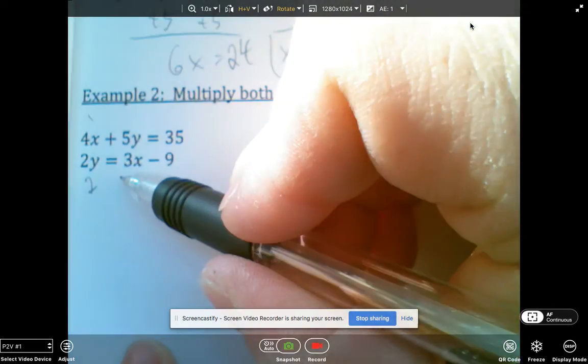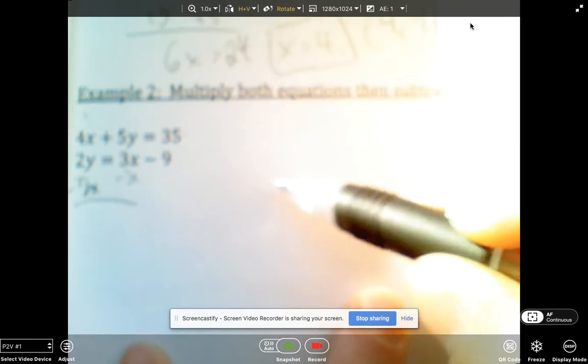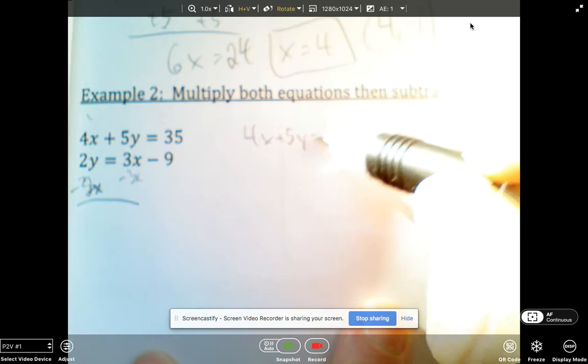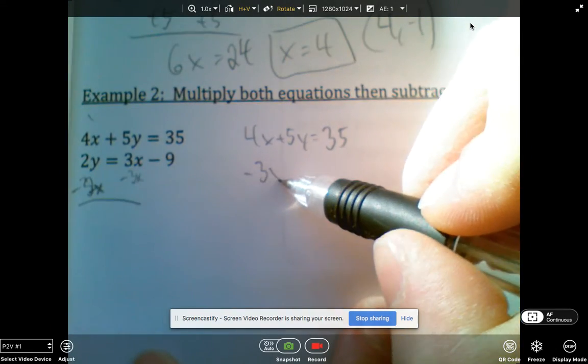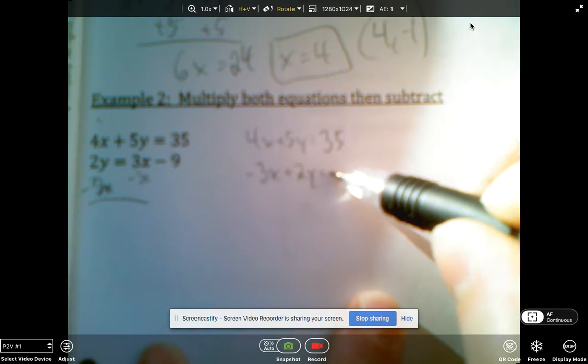I'm going to minus 3x on both sides. And now my two equations are 4x plus 5y equals 35, and then negative 3x plus 2y equals negative 9.